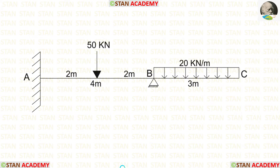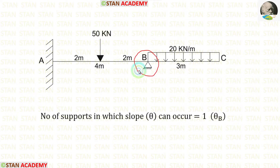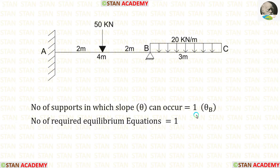In the slope deflection method, we need to identify the number of supports where slope can occur. In a fixed support, there will be no slope. In a hinged or roller support, there will be slope. At point B, there is a hinged support, so the number of supports where slope can occur is equal to 1. At point B, there is theta B, and to calculate theta B, we need one equilibrium equation.